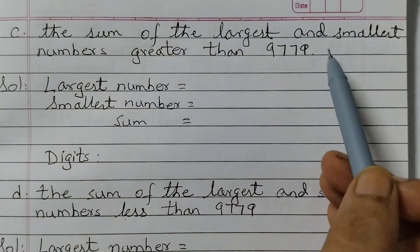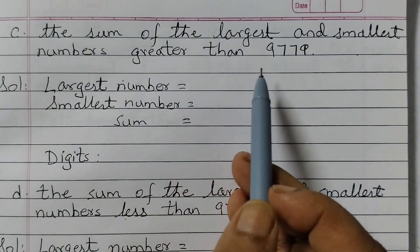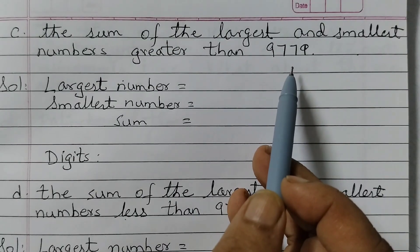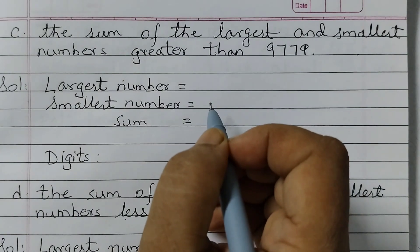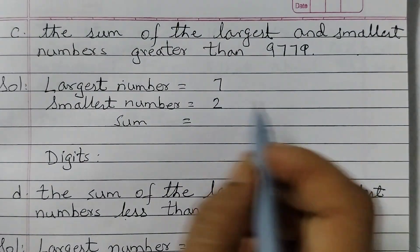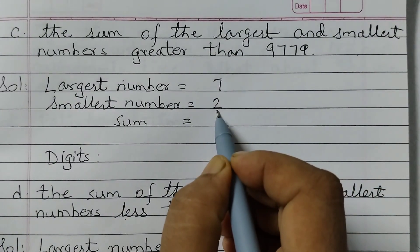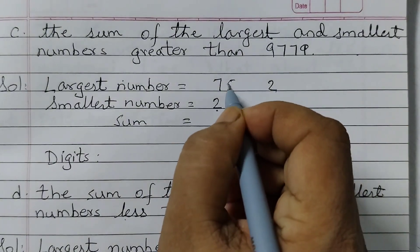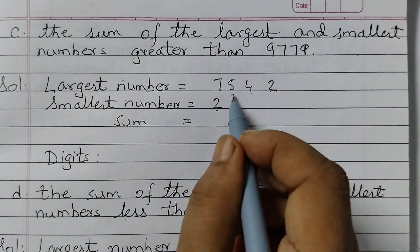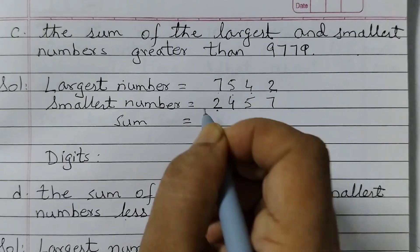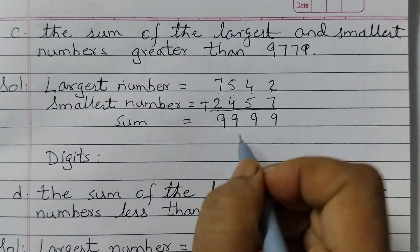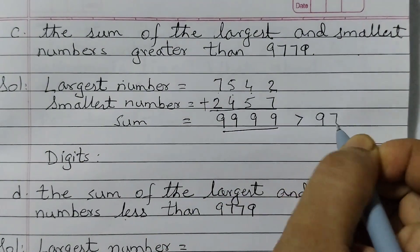Now for part C, the sum of the largest and smallest numbers should be greater than 9,779. Again I will fill the thousands digit first. I will write 7 and 2, so 7 plus 2 is 9. Then I fill up the rest with the two smallest digits, 5 and 4. So the largest number is 7,542 and the smallest number form would be 2,457. When you add them up you get 9,999, and this is greater than 9,779.